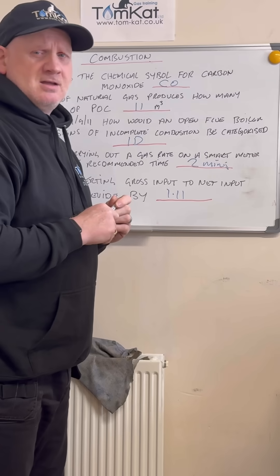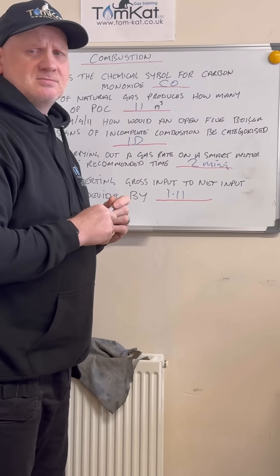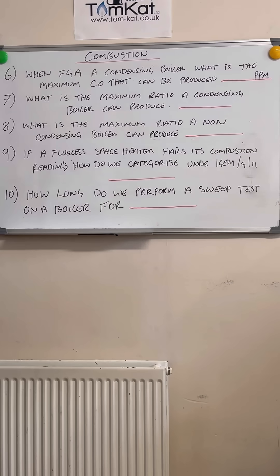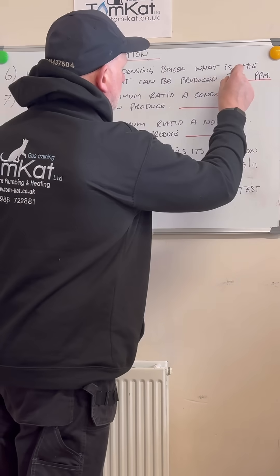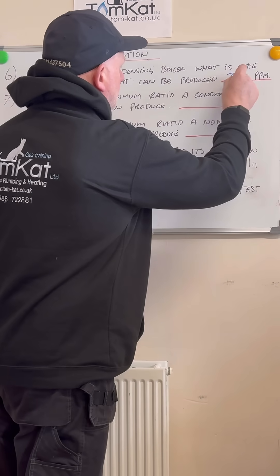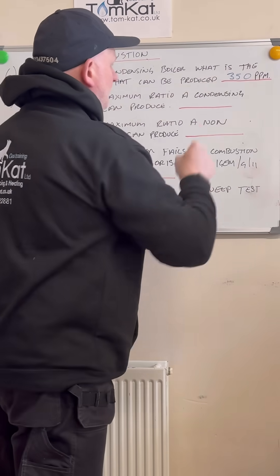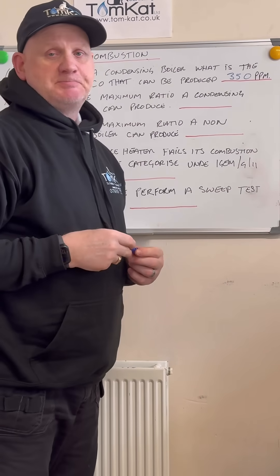Let's have a quick question six. When flue gas analyzing a condensing boiler, what is the maximum CO that can be produced? Hopefully you put 350 parts per million.